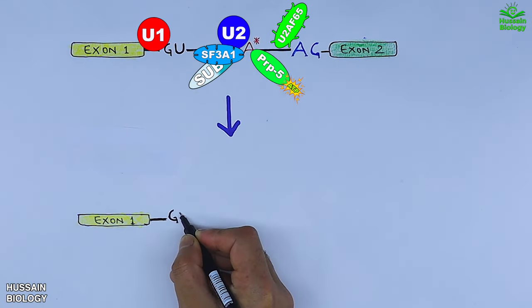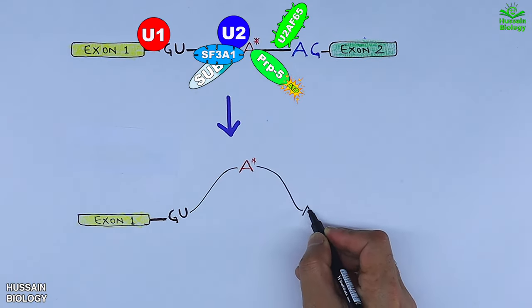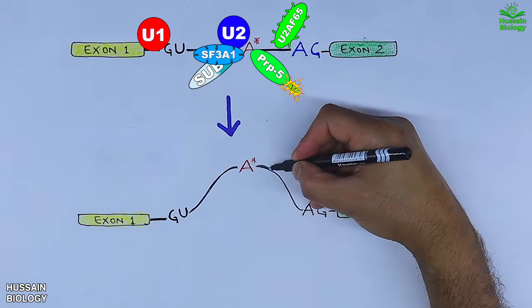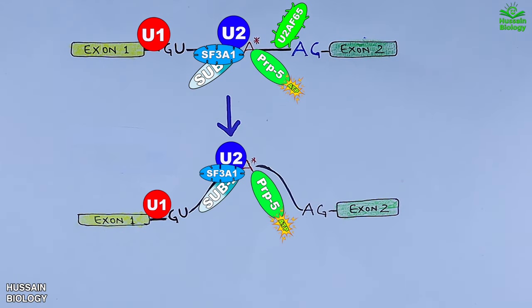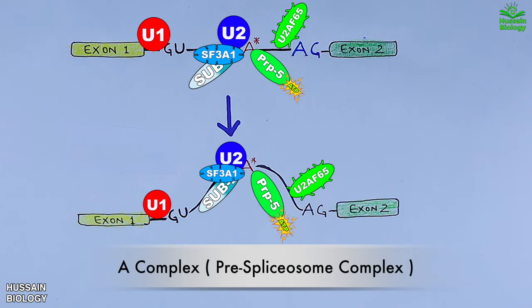The 5 prime splicing site is brought in close proximity to the 3 prime splicing site, thus forming a loop as shown in the diagram. This complex is termed A complex or pre-spliceosome complex.